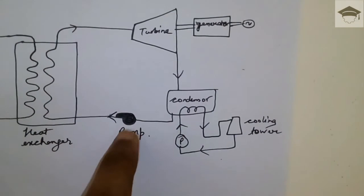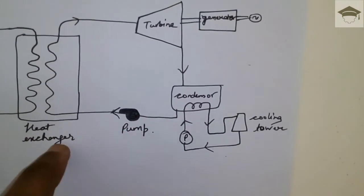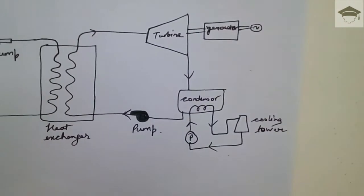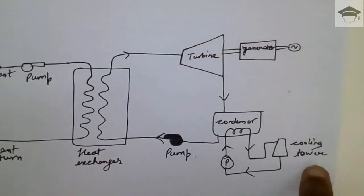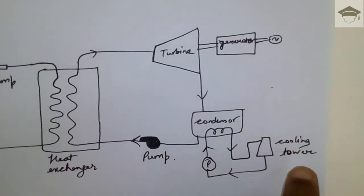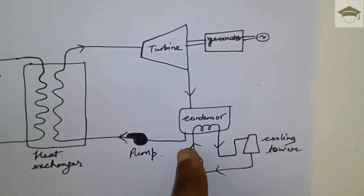So the cycle is completed. And here a cooling tower is employed so as to cool the circulating water that is passing through the condenser, which takes the heat from the steam.